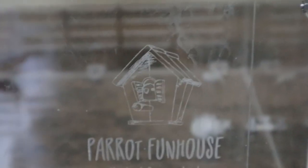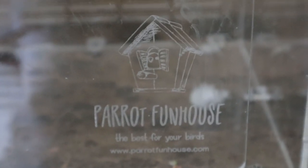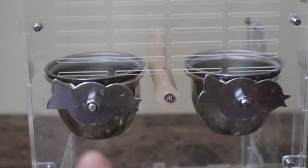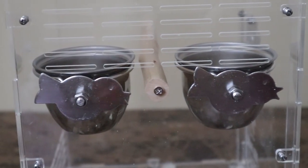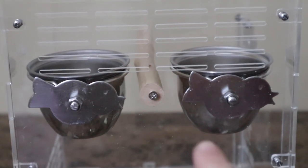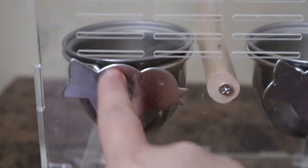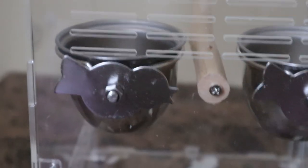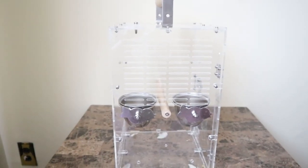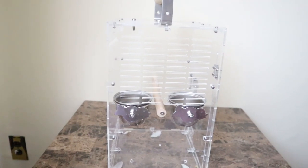These are the feeding bowls, but what I think is a very cute touch is that these metal parts, they're in the shape of a bird, and I think those are like the cutest thing ever.